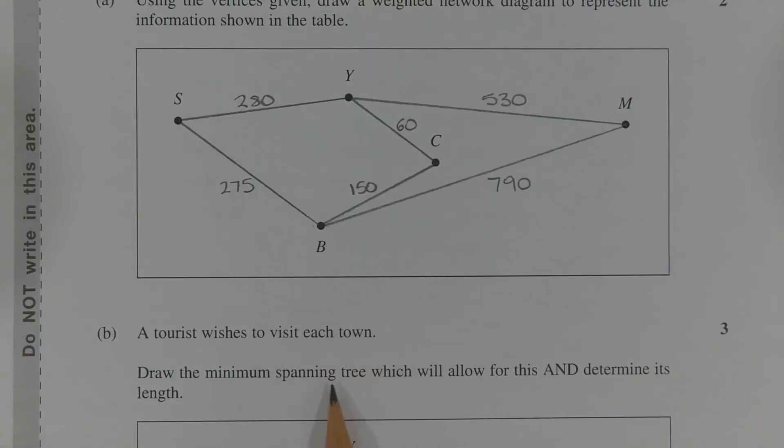A spanning tree that connects all five vertices in this network together without cycles requires four edges, and there are many possible spanning trees. To draw the minimum spanning tree, which is the spanning tree of minimum weight, an algorithm will need to be applied, such as Kruskal's algorithm or Prim's algorithm.